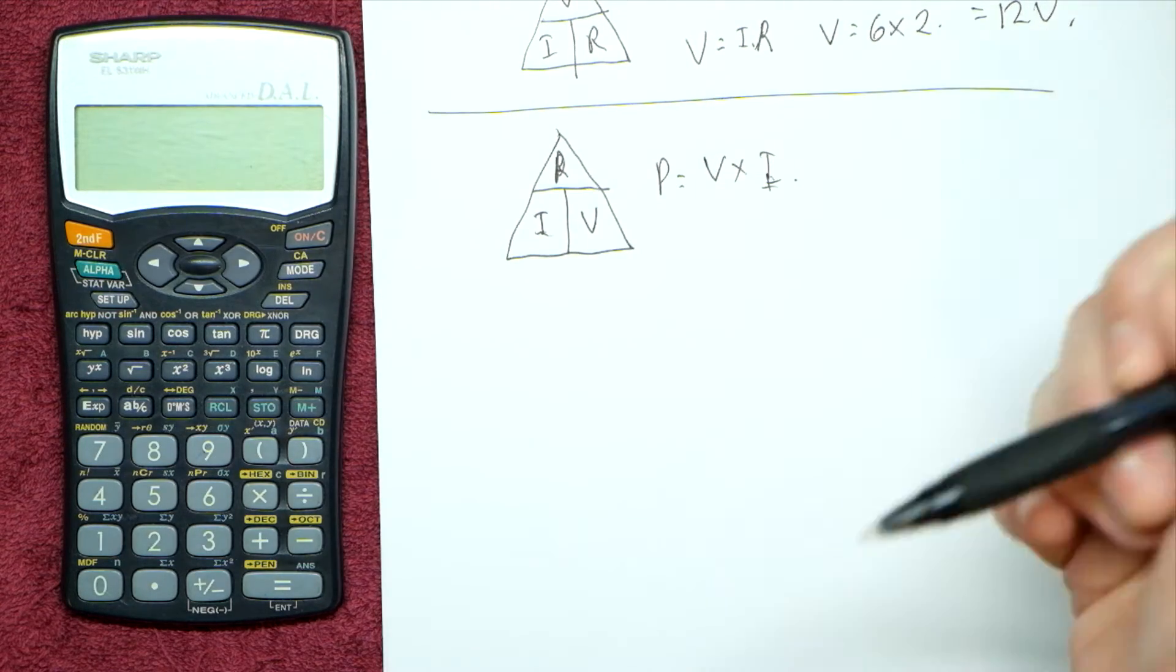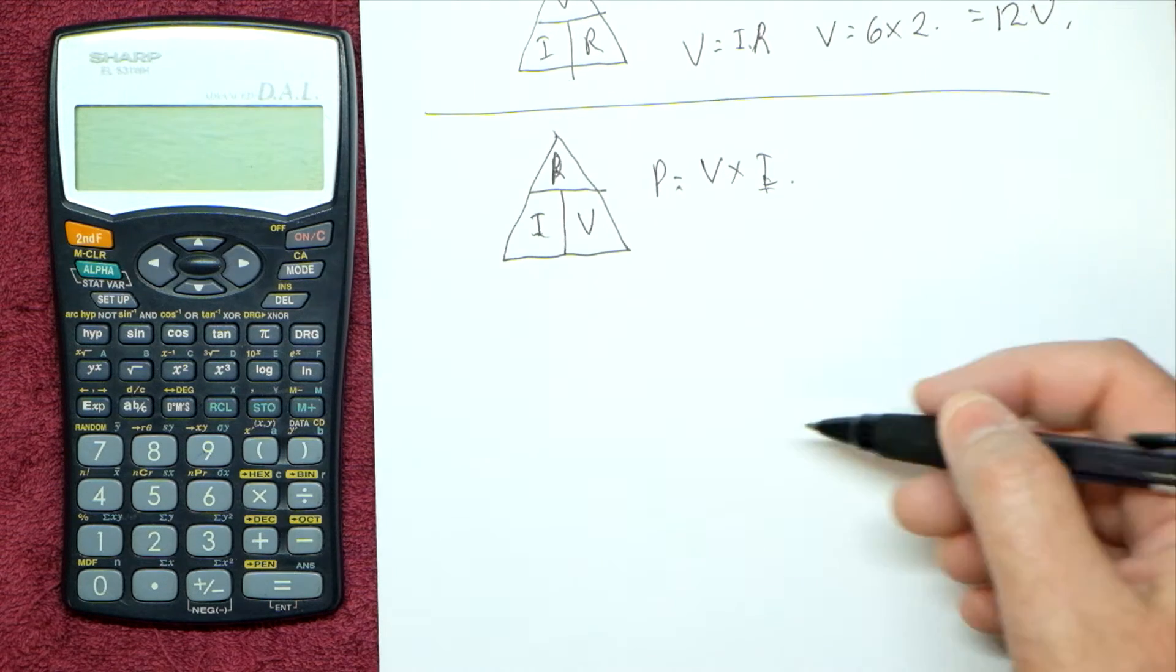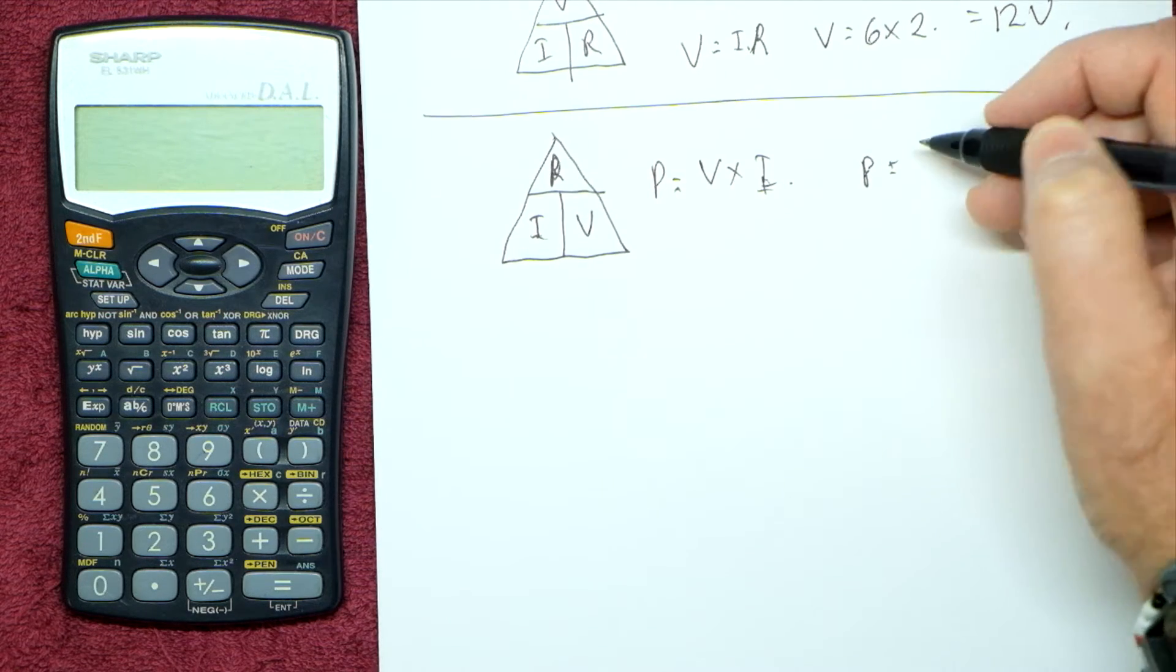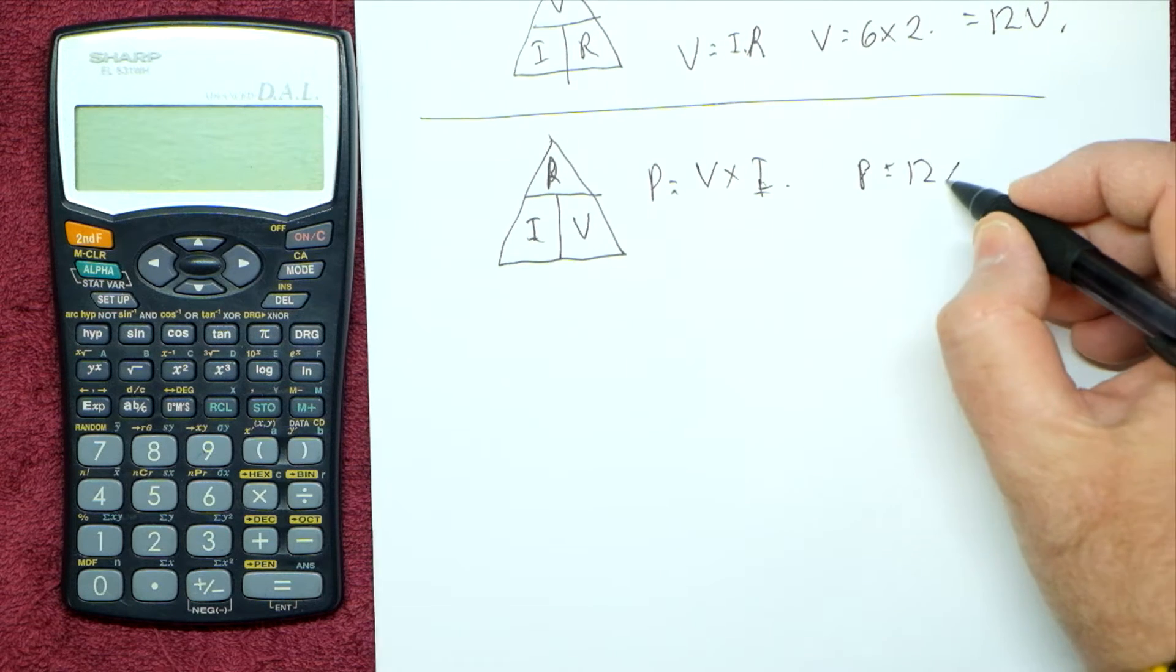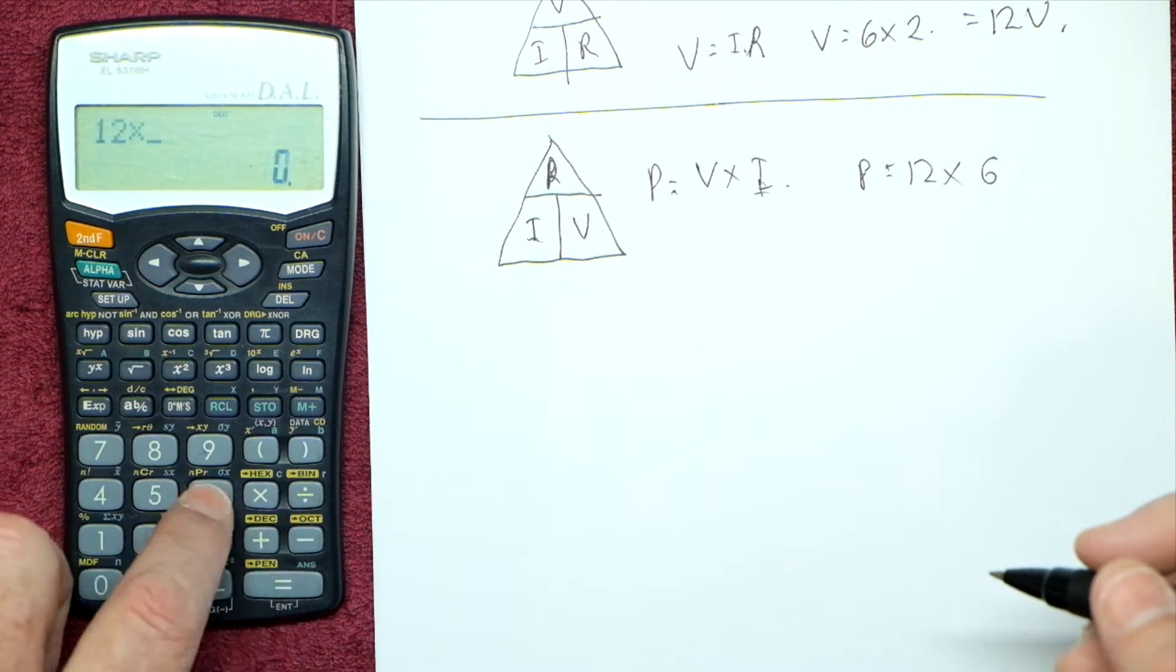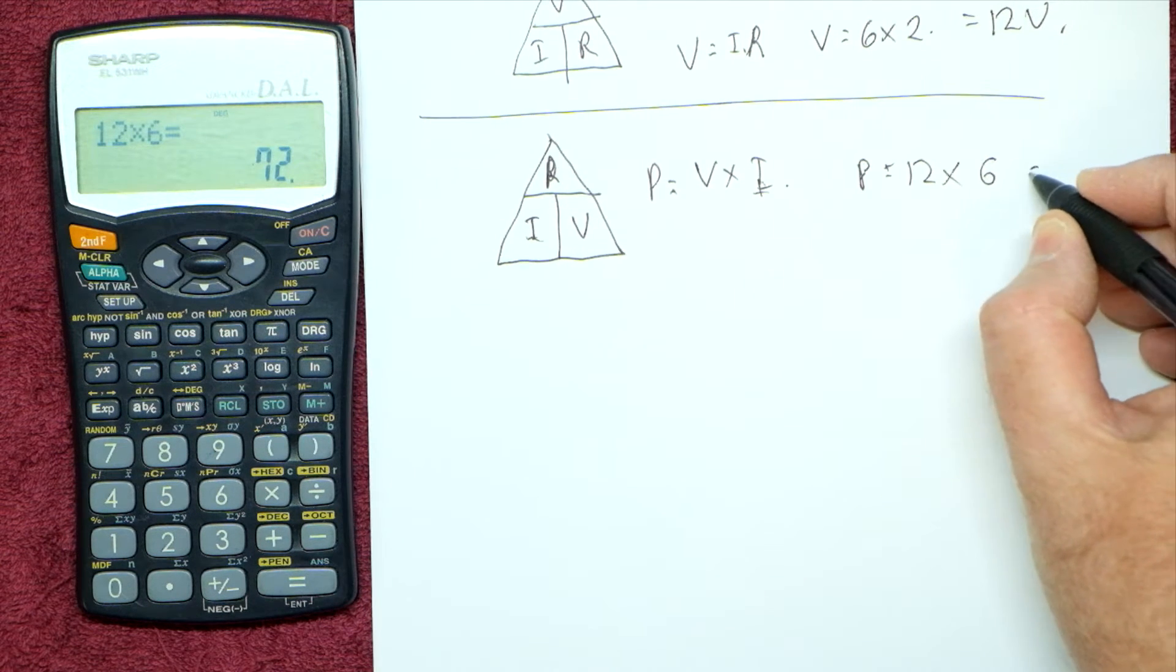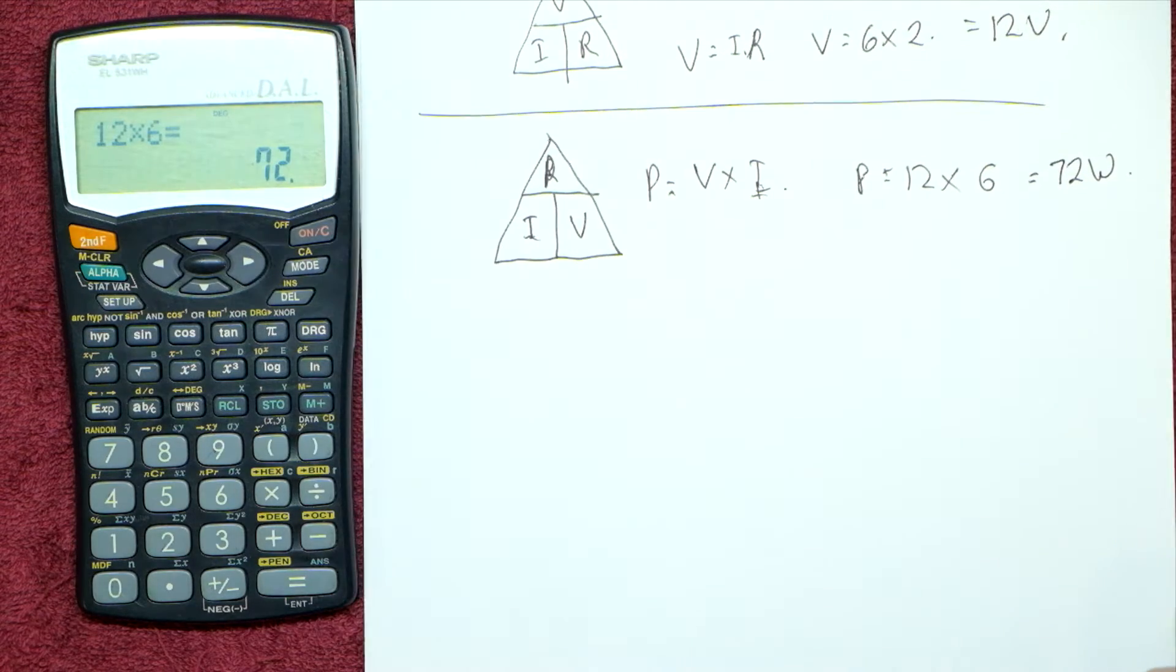So to work out power, how much power a circuit is using, let's take the same one from above. Power in watts is equal to volts, 12 volts, times amps, 6 amps. Now 12 times 6, I could probably do this quickly, but let's just do it on here, is 72. So it equals 72 watts. So 72 watts of power based on the above.